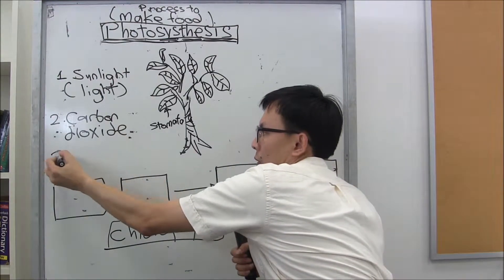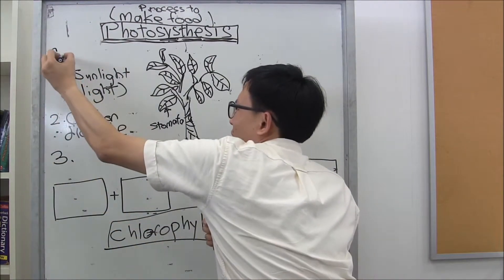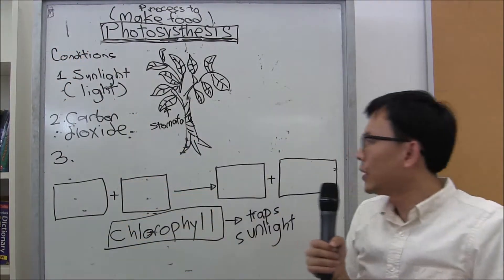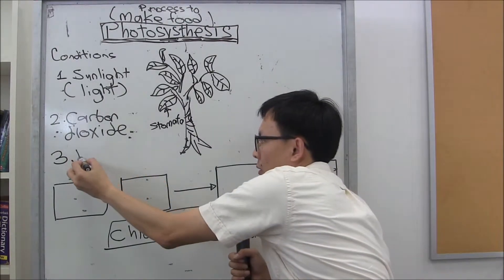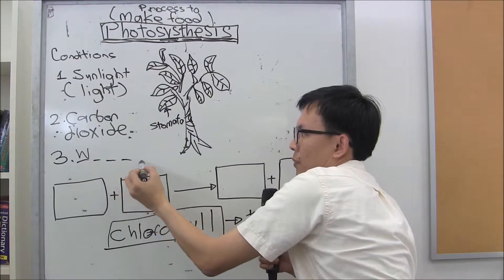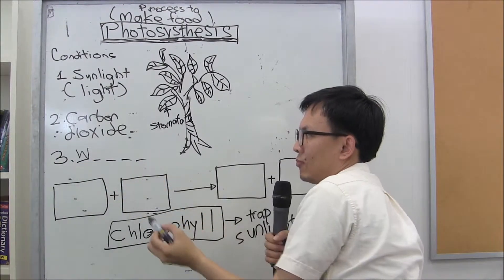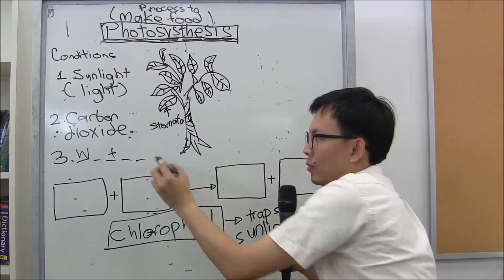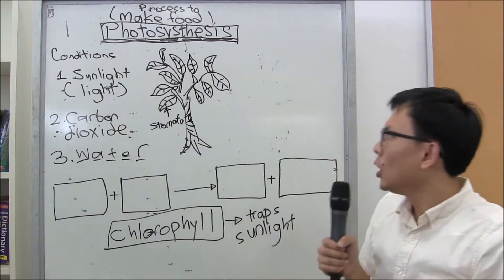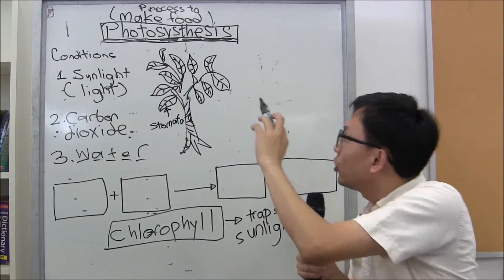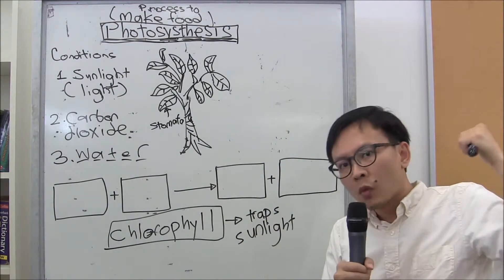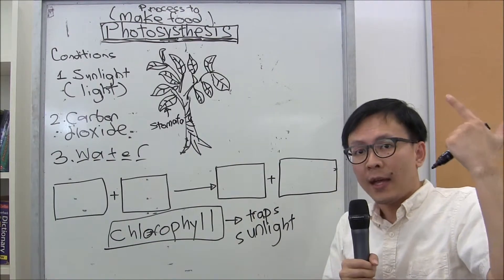And lastly, the third condition required — let me see if you can guess this, it starts with the letter W. Water! So these are the three conditions required in order for photosynthesis to occur. A plant requires sunlight, carbon dioxide, and water in order to make food.